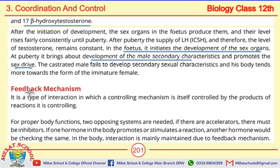Next is a very important topic: the feedback mechanism. The feedback mechanism is a mechanism in which the products of a reaction help to control that reaction. It is a type of interaction in which a controlling mechanism is itself controlled by the product of reactions it is controlling. For proper body functions, two opposing systems are needed — if there are accelerators, there must be inhibitors. If one hormone promotes a reaction, another hormone checks it. This is a rule of nature.